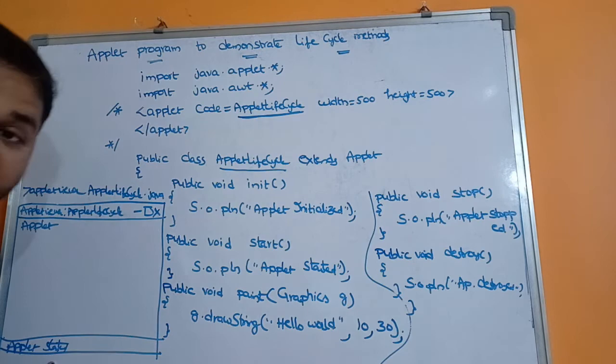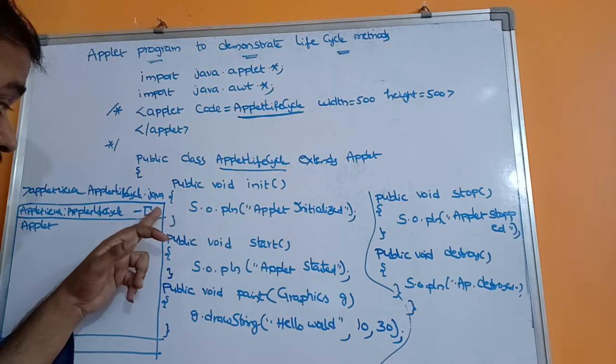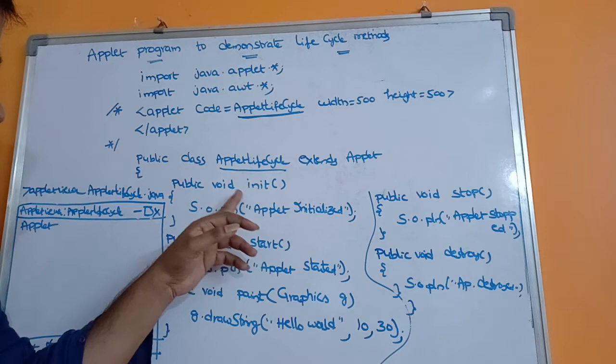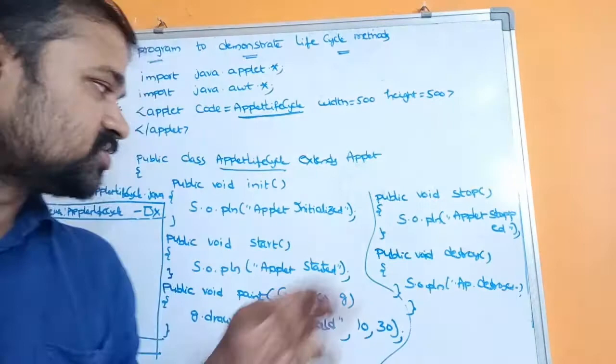In the status bar, 'Applet started' will be printed when the applet begins execution. If you click the minus button, 'Applet stopped' will be printed. If you click the rectangle button, 'Applet started' will be printed again. If you click the cross mark, 'Applet destroyed' will be printed. First, the init method will be executed and System.out.println('Applet initialized') will be printed in the command prompt.